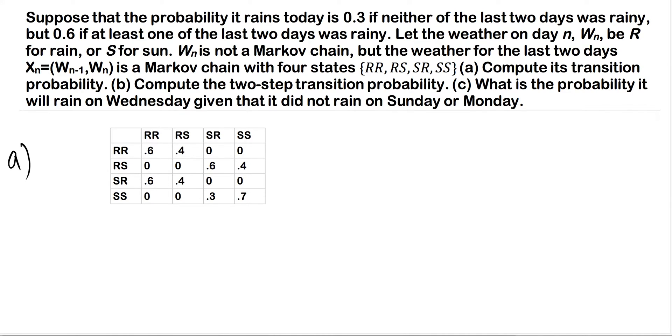Suppose the probability it rains today is 0.3 if neither of the last two days was rainy, but 0.6 if at least one of the last two days was rainy. Let the weather on day N, WN,